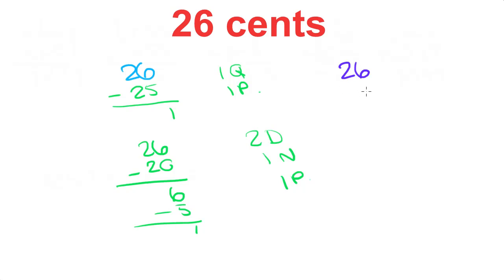Or, 5 times 5 is 25. So 5 nickels and 1 penny. So many possibilities.